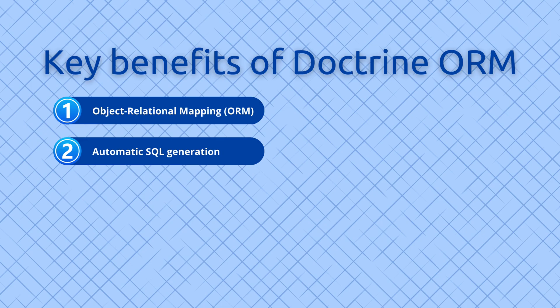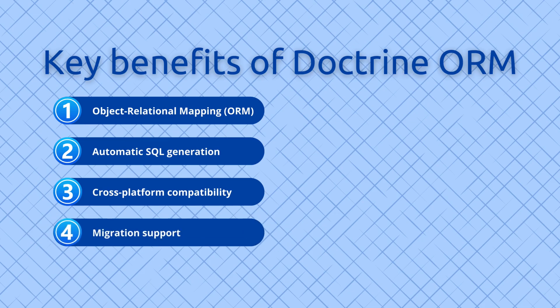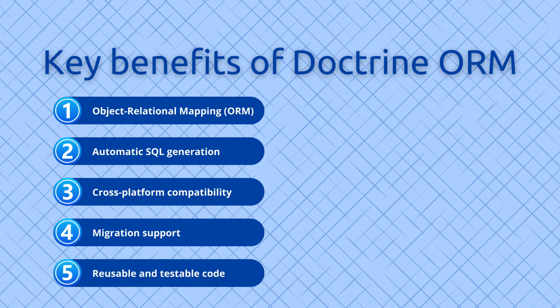Cross-platform compatibility: Doctrine is compatible with a wide range of database systems like MySQL, PostgreSQL, SQLite, Microsoft SQL Server, and more, making it easier to switch databases without significant code changes, as database-specific SQL is abstracted. Migration support provides built-in tools for managing database schema changes over time using migrations, tracking schema differences and generating migration files that can be applied to update the database schema consistently across environments. Reusable and testable code encourages separation of concerns by decoupling data access logic from business logic, making code easier to test and maintain.